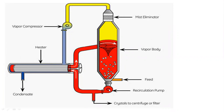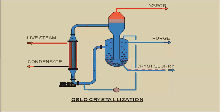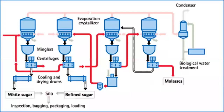In another type, the feed enters at the bottom, and the recirculation pump sends it through a heat exchanger with steam and condensate. The vapor goes through a vapor compressor up into a vapor body where crystallization occurs. The resulting crystals go to a centrifuge or filter for further processing. In Oslo crystallization, a similar arrangement is used where crystal slurry is taken out through a heat exchanger, vapors exit for purging, and crystal slurry goes for further processing through the centrifuge.